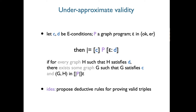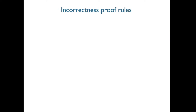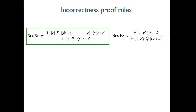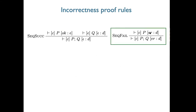The idea of the paper was to propose deductive rules for proving valid triples of this kind. For sequential composition, if you want to prove a triple about P followed by Q, you prove two separate triples about P and Q. One rule handles the case where P executes ok and Q either is ok or finitely fails; another handles the case where finite failure occurs already in P. We need two separate rules here.